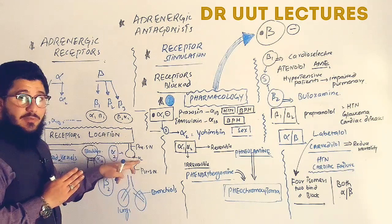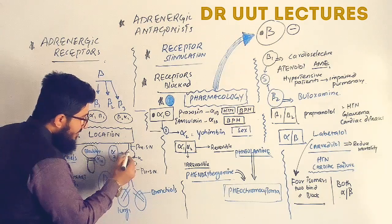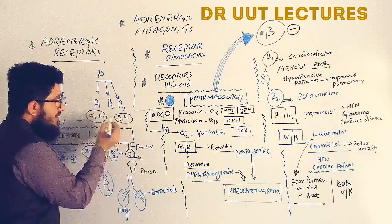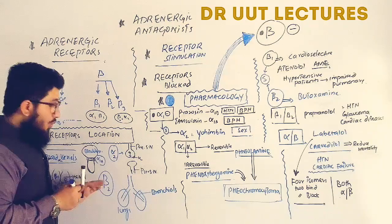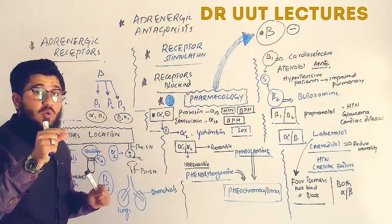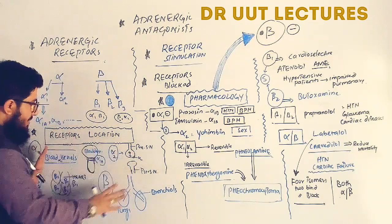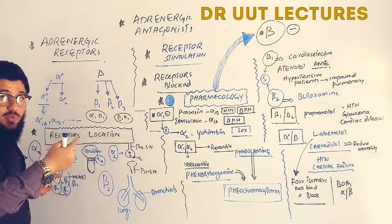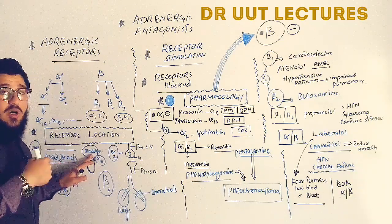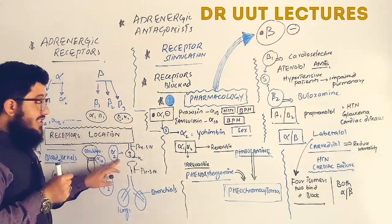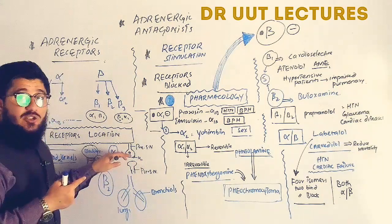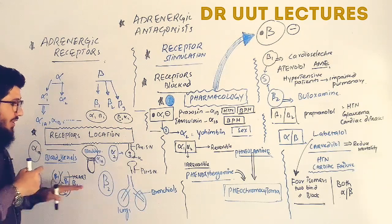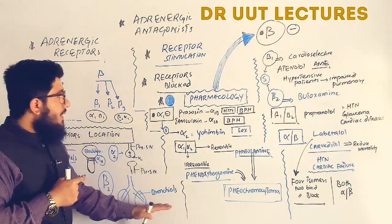Stimulating alpha-2 receptors sends an inhibitory signal to the presynaptic neuron, decreasing the release of norepinephrine from the neuron into the synapse. Beta-2 receptors in the bronchioles, when stimulated, produce bronchodilation due to their inhibitory effect on bronchiole smooth muscle. So to summarize: alpha-1b → vasoconstriction; alpha-1a → urinary retention; alpha-2 → decreased norepinephrine release; beta-1 → increased heart function; beta-2 → bronchodilation.